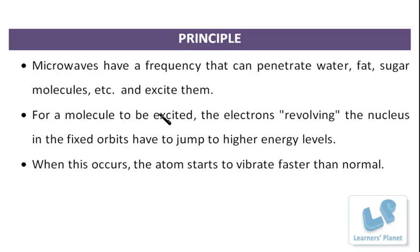Now for a molecule to be excited, the electrons revolving around the nucleus in the fixed orbits have to jump to higher energy levels. Because they are at the lower energy levels at first, and when the molecules are excited, they jump to higher energy levels. So when they jump to higher energy levels, what happens? The atom starts to vibrate faster than the normal speed. And when this happens in some glass of water, then what will be the result?